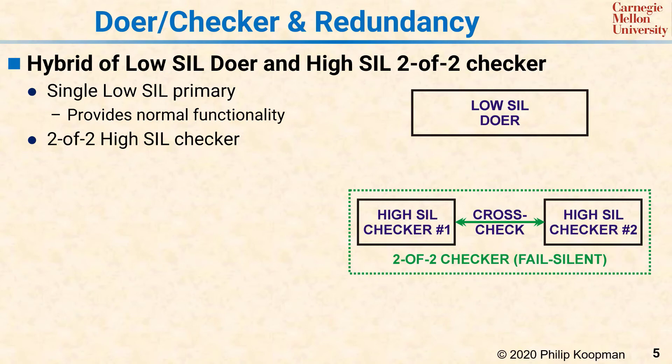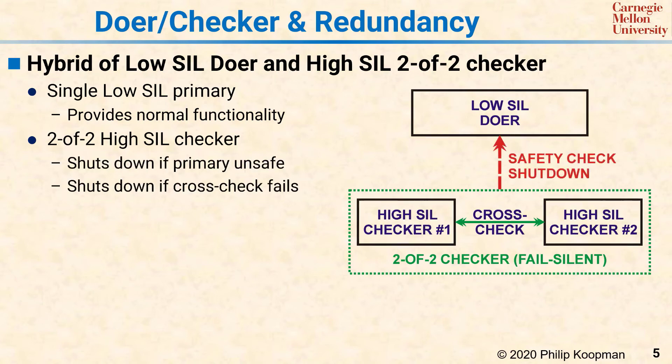The 2-of-2 checker pair checks a single 1-of-1 doer, which operates at a lower safety integrity level. So if the doer makes a mistake, the checker will shut it down. And if either of the two CPUs in the checker makes a mistake, the other checker will shut down the whole checking block, which also results in the doer being shut down.